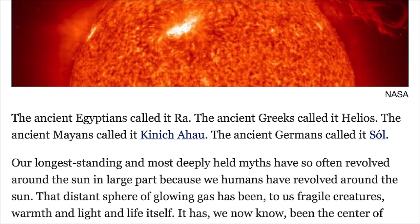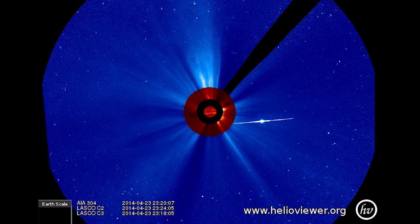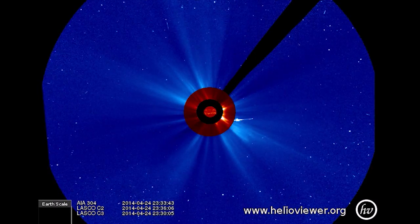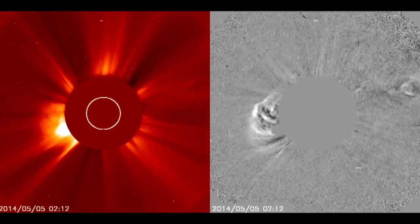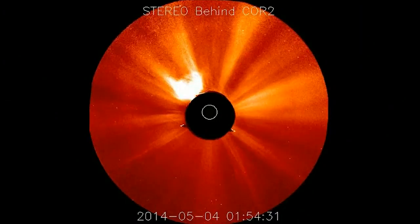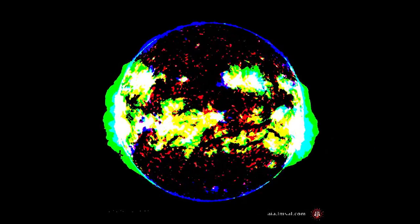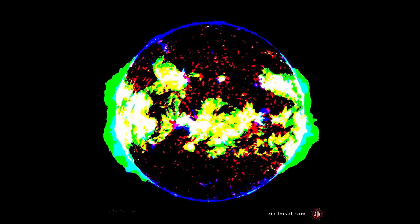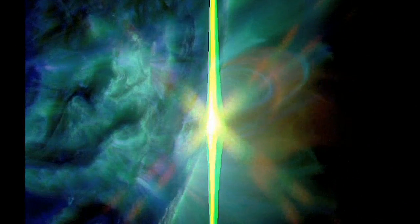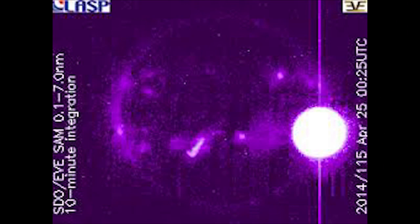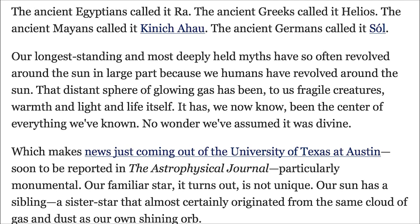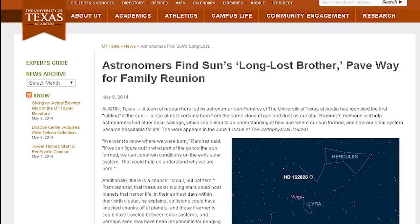That distant sphere of glowing gas has been to us fragile creatures warmth and light itself. Some of us pseudo-scientists would say yes: warmth, light, air, water, atmosphere, environment, climate, weather. But science is like, no, no, no, no, the sun doesn't have that much of an effect on the weather. That's you, dude, for smoking cigarettes and farting. It's good to be a pseudo-astronomer where I can disagree with science when it says dumb shit. It has, we now know, been the center of everything we've known. How would you prove that it wasn't divine? Which makes news just coming out of the University of Texas at Austin, soon to be reported in the Astrophysical Journal, particularly monumental.